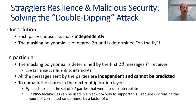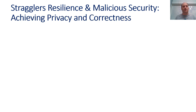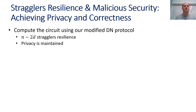This solution raises challenges for unmasking shares in the next multiplication layer. For this to succeed we need two additional things: P1 must send the set of 2D parties used to interpolate (i.e., whose messages arrived first), and we need to tweak the correlated randomness — we show in the paper that our PRSS techniques can support this in a black box way without any additional communication, though this requires increasing the amount of correlated randomness by a factor of N. With our solution, we compute the circuit with N minus 2D straggler resilience and with privacy. To achieve full malicious security we also need correctness, for which we use distributed zero-knowledge proofs due to Boneh et al. to verify all multiplications with sublinear communication in the circuit size and constant number of rounds.